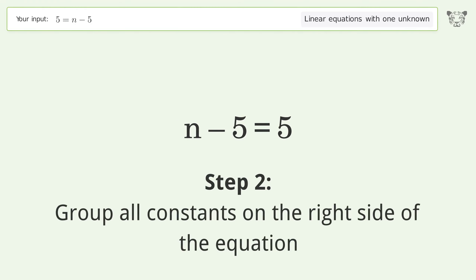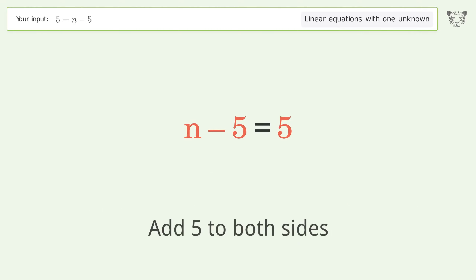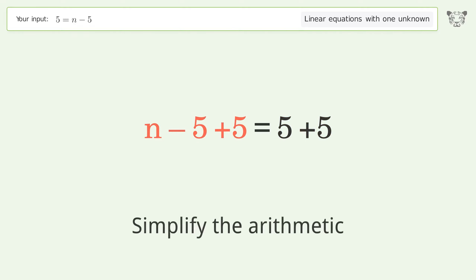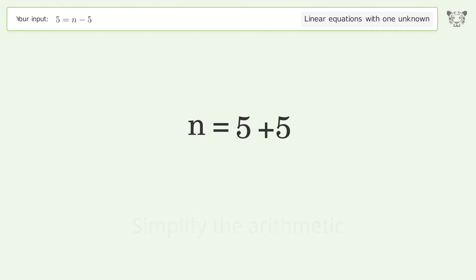Group all constants on the right side of the equation and add 5 to both sides. Simplify the arithmetic, and so the final result is n equals 10.